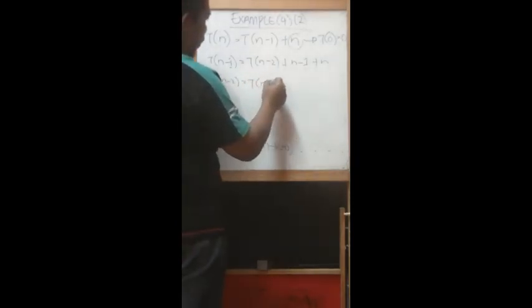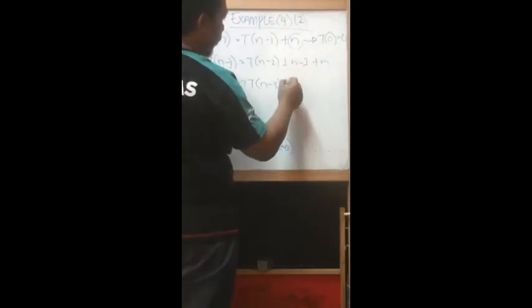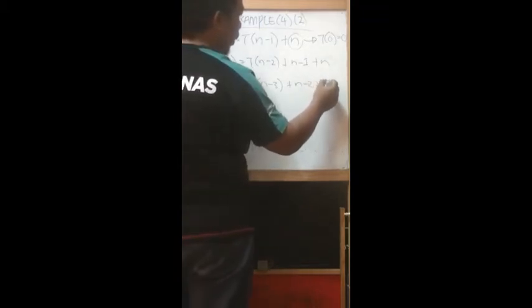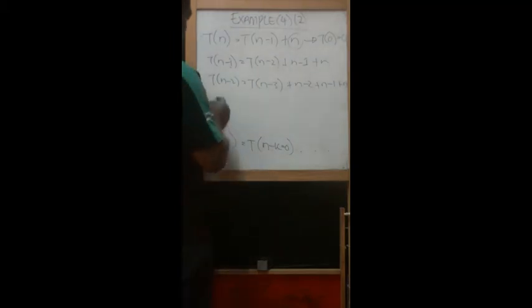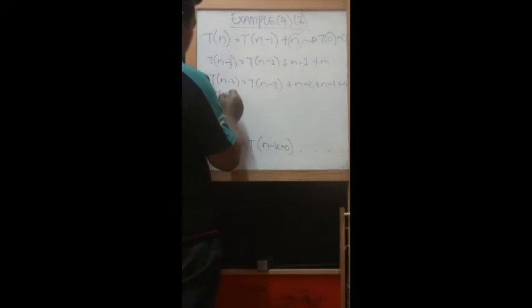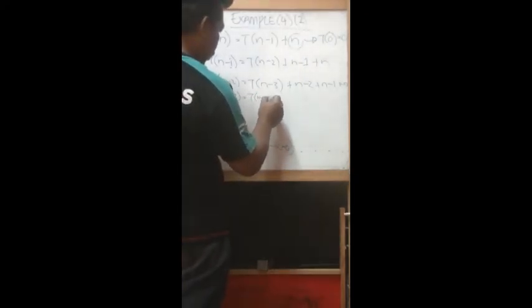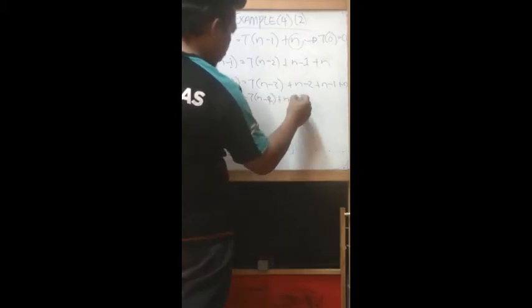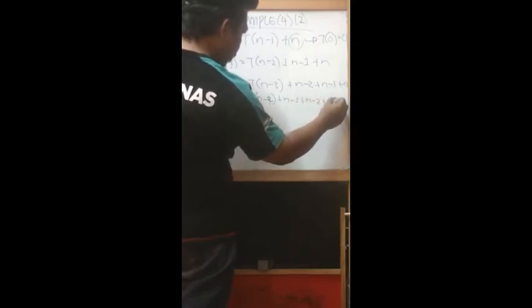Continuing this pattern, we get T(n-3) + (n-2) + (n-1) + n, and so on. We can substitute until T(n-k) + (n-k+1) + ... + (n-2) + (n-1) + n.